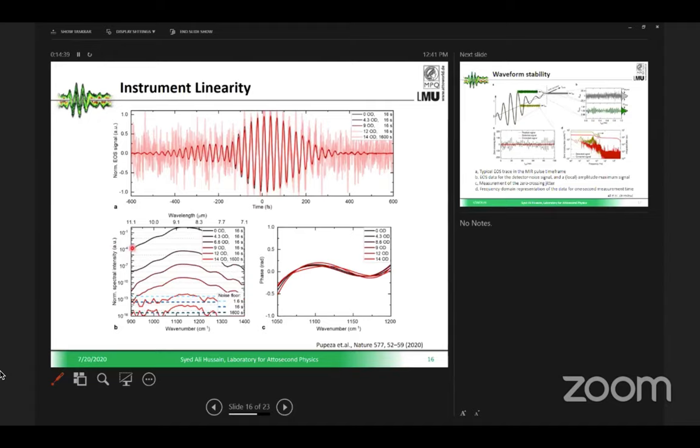Let me give you a quick update on how good our dynamic range or signal-to-noise ratio is. This is the black curve of our spectrum that we can measure. If we attenuate our beam by 10,000 times, we can still measure it—this is 4 OD with 16 seconds of measurement time. We can even attenuate it more by 100 times. As you can see, we can attenuate 10 to the power 12 times and we can still see some signal. This is the sensitivity we can achieve with this instrument.